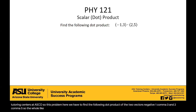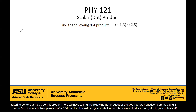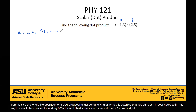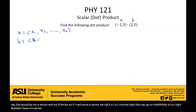So the whole operation of a dot product — I'm just going to write this down so that you can get it in your notes. So if I had some A vector, we'll call it A1, A2, and this can go on indefinitely to A-N. Likewise, I have a B vector that goes on indefinitely to B of N.